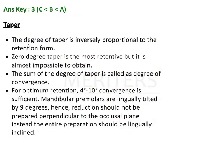Let's have a look at the explanation. The degree of taper is inversely proportional to the resistance form. 0 degree taper is the most retentive and it is impossible to obtain. For optimal retention, 4 to 10 degrees or normally 6 degrees of convergence is sufficient.